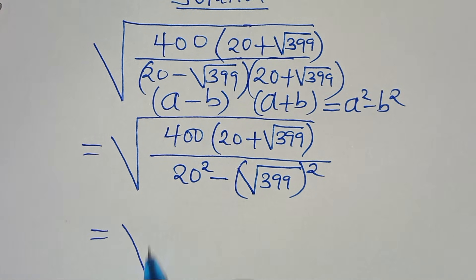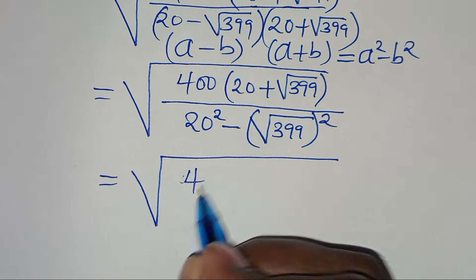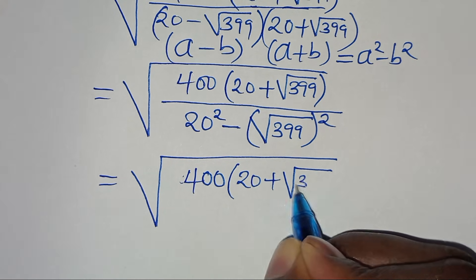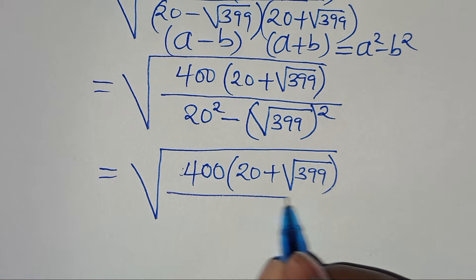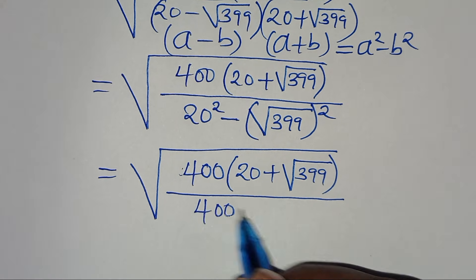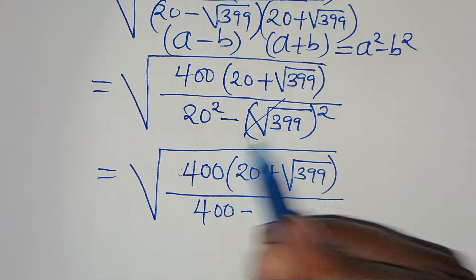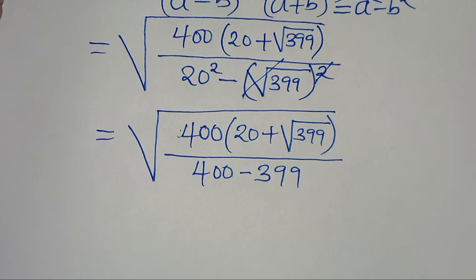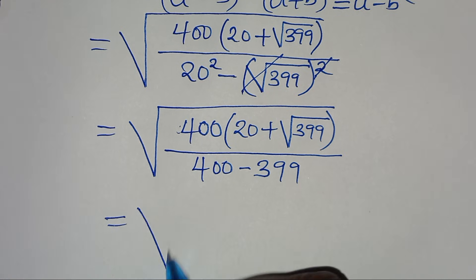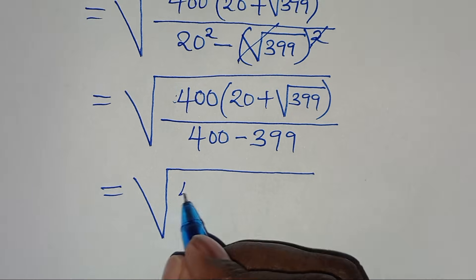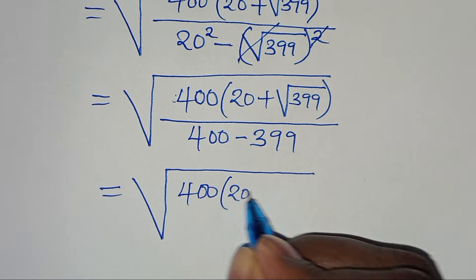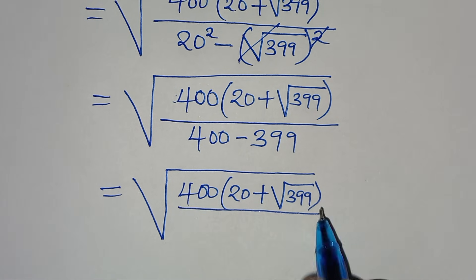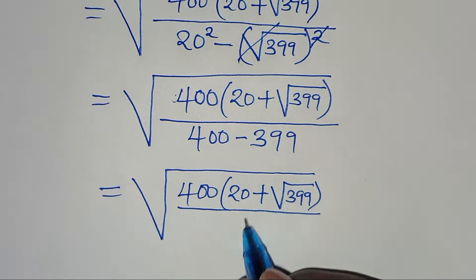So we have the square root of 400 multiplying by 20 plus the square root of 399, divided by 20 squared, which is 400, minus the square root of 399 squared. We can eliminate the square root sign, giving 400 minus 399. Therefore we have the square root of 400 multiplied by 20 plus square root of 399, all divided by 400 minus 399, which equals 1.